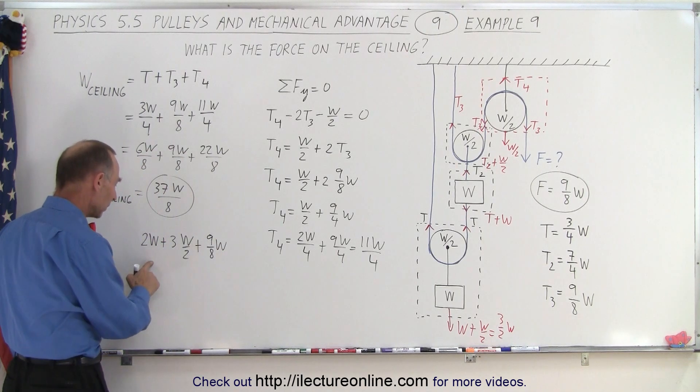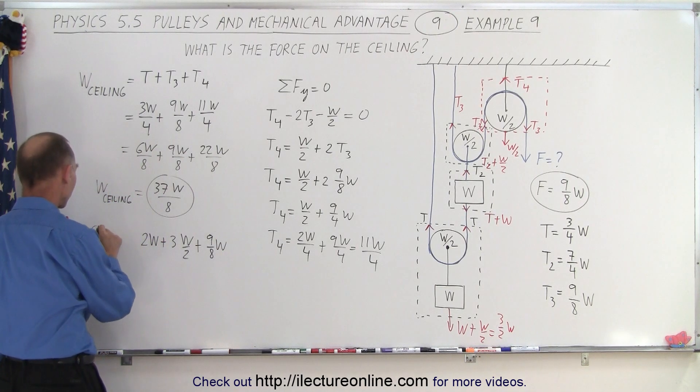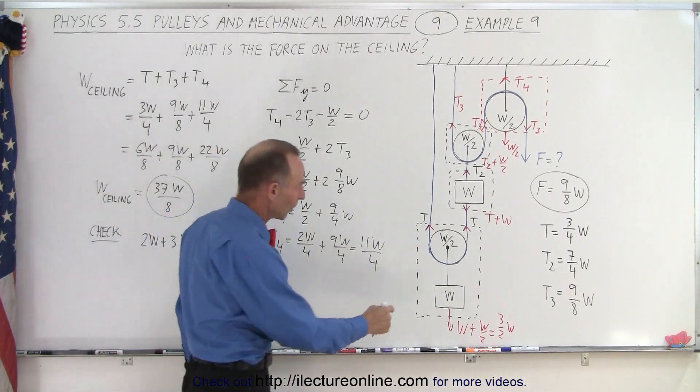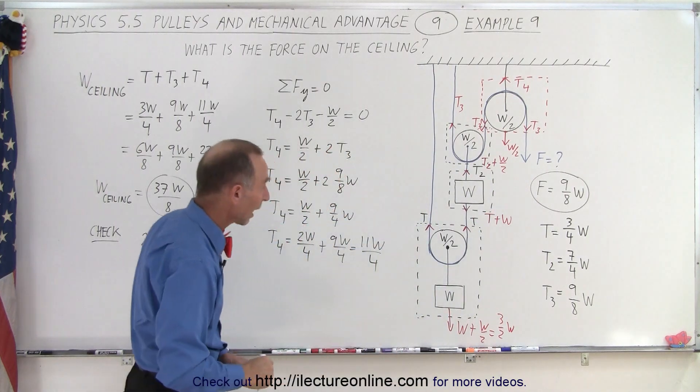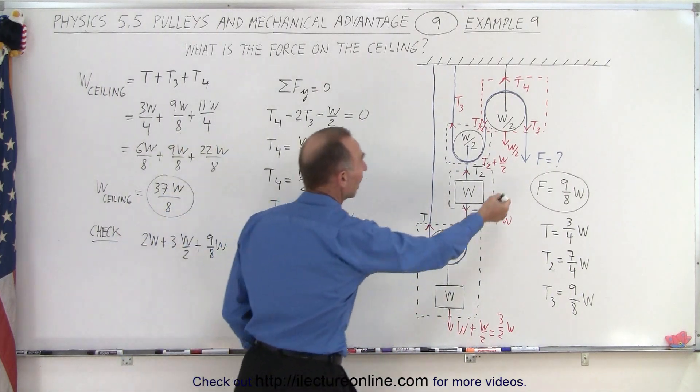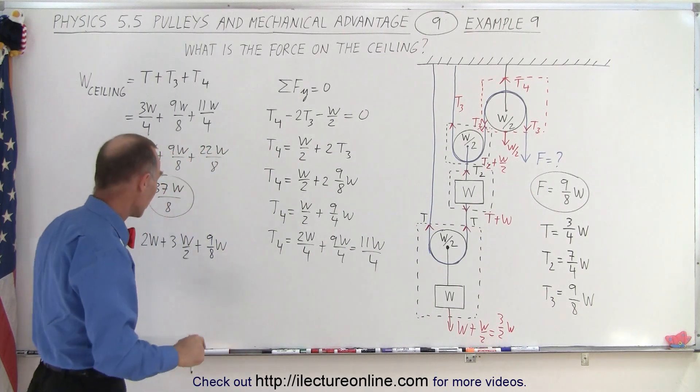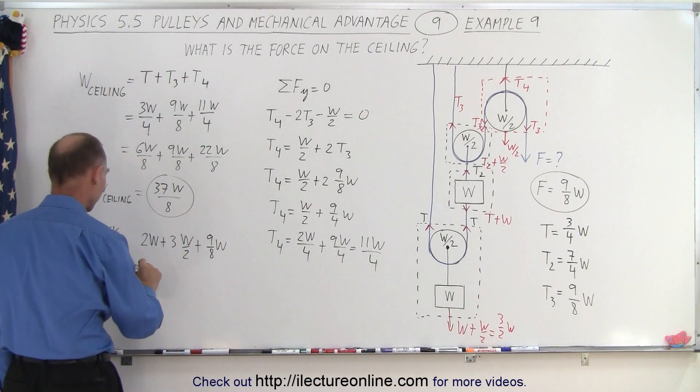Putting all that over the same common denominator, so this is a check, right? We're going to check by adding up all the weights. We have two W's to add up, and we have three W over 2's to add up, and in addition to that, the force by which we pull down, and we should end up with the same number.